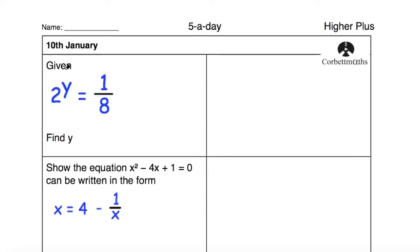So the first one says: given 2^y = 1/8, find y. So we know that any number to the negative exponent—let's say 2^(-1)—that will be 1 over that number.